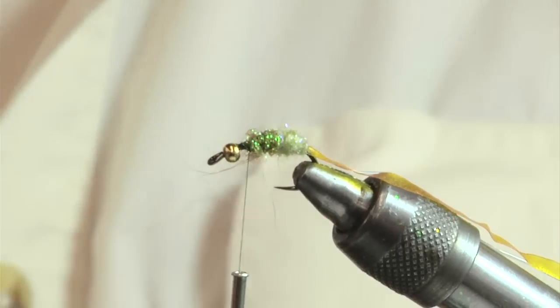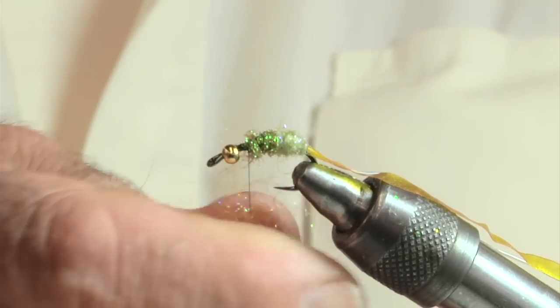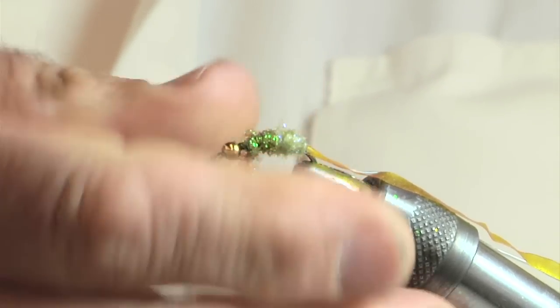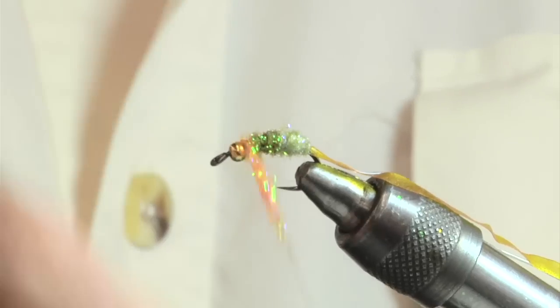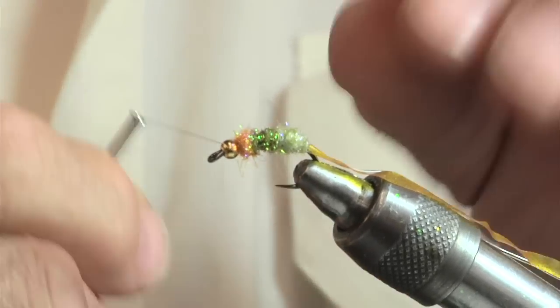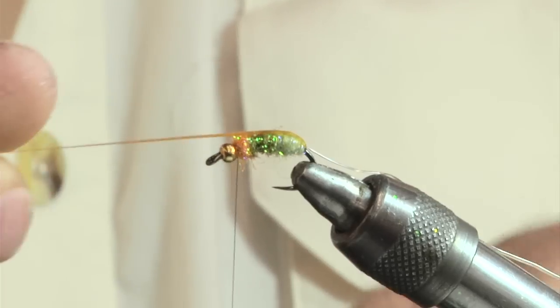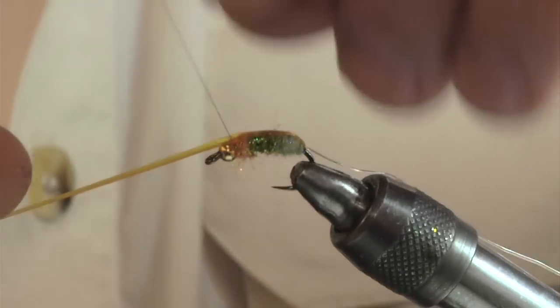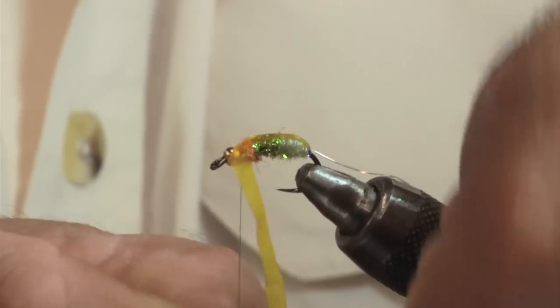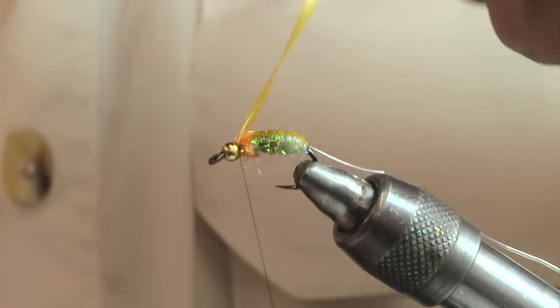Now I want a bright orange. This is kind of a hot spot on the fly, and basically it's an attractor as well. And I take the stretching material and run over the back flex, taking a couple wraps.